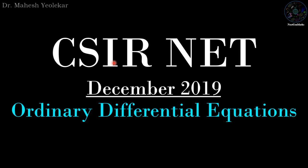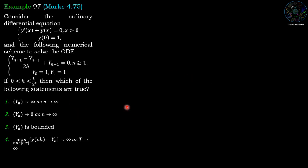Welcome friends. In this video we are going to discuss a problem from CSIR NET December 2019 on ordinary differential equations. Consider the ODE: y' + y = 0, x > 0, y(0) = 1, and the following numerical scheme to solve the ODE: (y_{n+1} - y_{n-1}) / (2h) + y_{n-1} = 0, for n ≥ 1, with y(0) = 1 and y(1) = 1. If 0 < h < 1/2, which of the following statements are true?